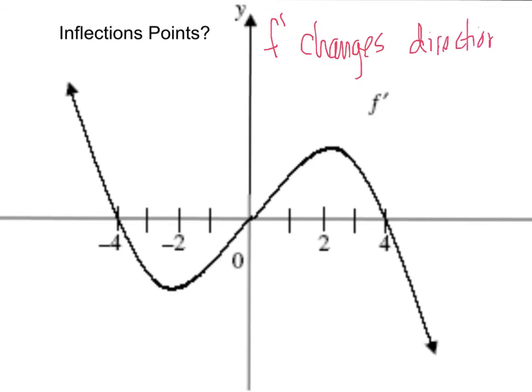And that's all encompassing. Then, you didn't have to say a change from positive to negative, or negative to positive. You just say it changes direction. So, the inflection points occur here at negative 2, and over here at positive 2.